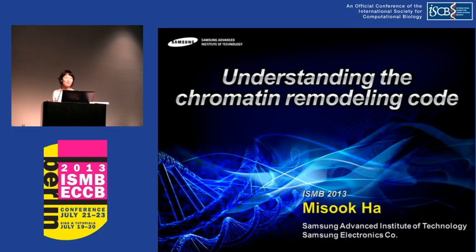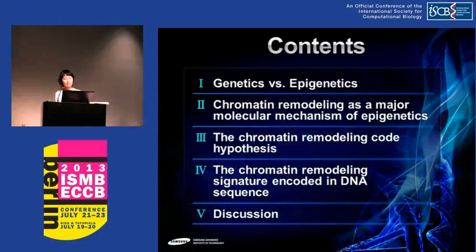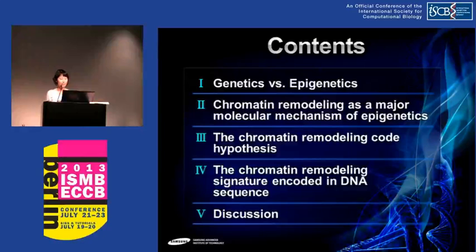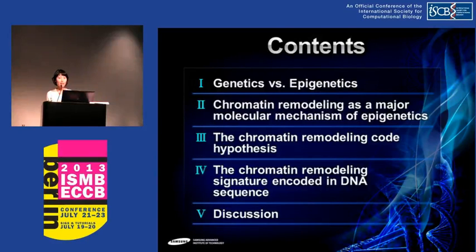I changed the title a bit: Understanding the Chromatin Remodeling Code. In this talk, I would like to emphasize how genetic and epigenetic factors affect chromatin remodeling and how we find the chromatin remodeling code — the arrangement of various chromatin remodeling marks and their effect on gene expression — and we try to find the sequence signature associated with chromatin remodeling.